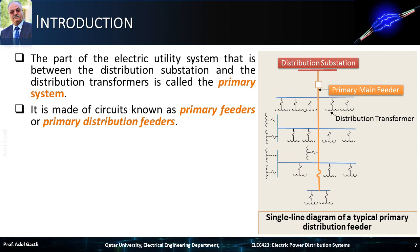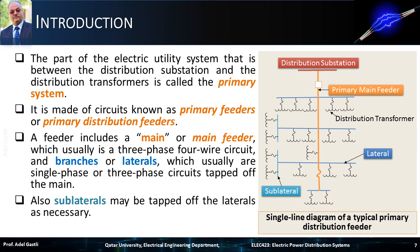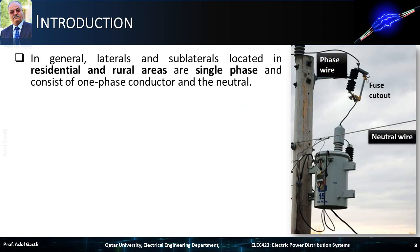It is made of circuits known as primary feeders or primary distribution feeders. A feeder includes a main feeder, which usually is a three-phase four-wire circuit. Branches or laterals, which usually are single-phase or three-phase circuits, are tapped off the main. Also, sublaterals may be tapped off the laterals as necessary. In general, laterals and sublaterals located in residential and rural areas are single-phase, and consist of one-phase conductor and the neutral.